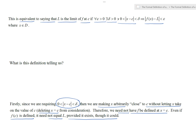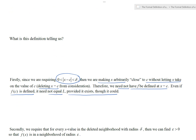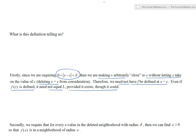Moreover, we require that for any x value in the deleted neighborhood with radius delta, no matter how big or small we make that deleted neighborhood, we can always find some other positive number epsilon so that the outputs f of x are in a neighborhood of radius epsilon around L.